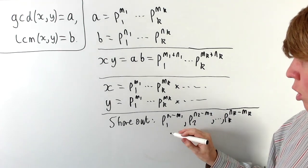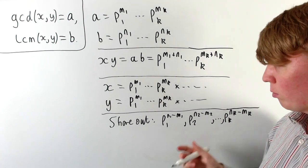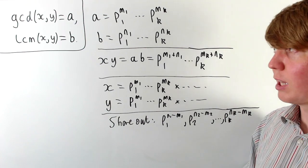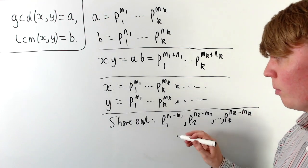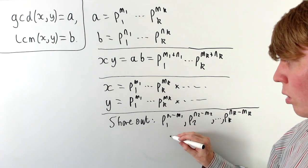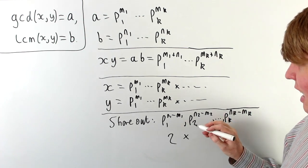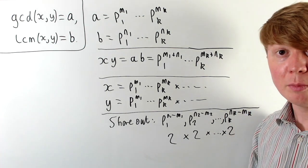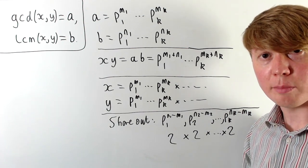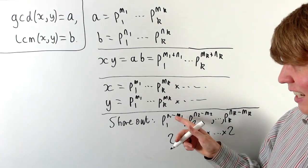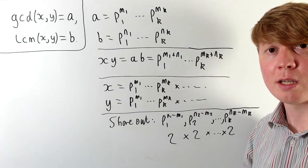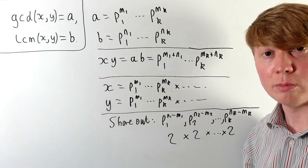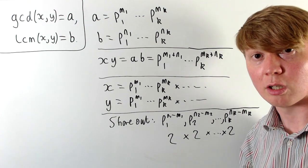For each prime pi, we must give all its remaining copies to x or all to y — splitting them between x and y would increase the GCD or reduce the LCM, breaking the solution. This gives two choices per prime, suggesting 2 to the power of k total solutions. However, if ni equals mi for some prime, there's nothing left to share out, so 2 to the k would be an overestimate. We need to refine this to get the exact answer.